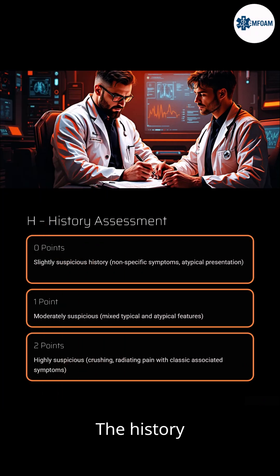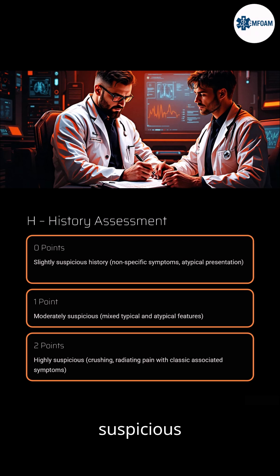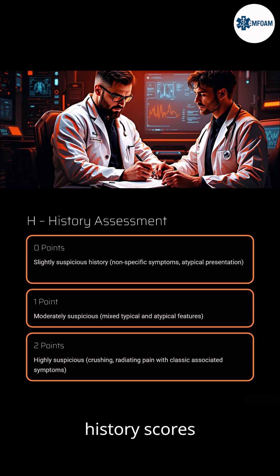The History component relies on clinical judgment. A slightly suspicious history scores 0, a moderately suspicious history scores 1, and a highly suspicious, typical cardiac history scores 2.